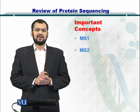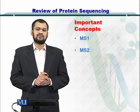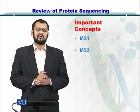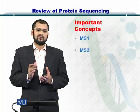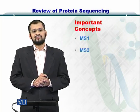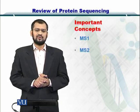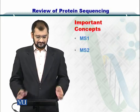The first step, MS1, was simply the measurement of the intact protein and its intact protein mass. For MS2, we measure the masses of the ions that are produced as a result of protein fragmentation.